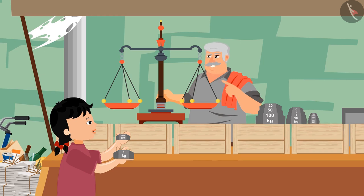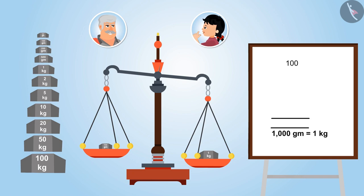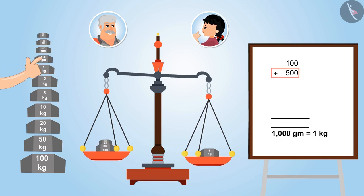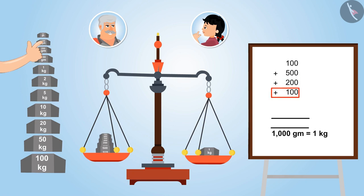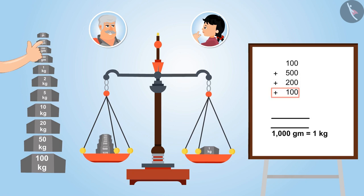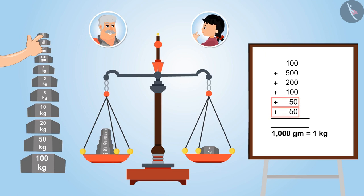Right. Now place some more weight on the side carrying hundred grams so that it becomes equal to one thousand grams and the scale gets balanced. Okay uncle, to this hundred grams I am adding five hundred grams, then two hundred grams, then hundred grams, and the last two stones of fifty grams each. Yes, now the total is thousand grams. Look uncle, the scale is now balanced.